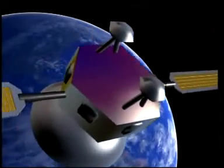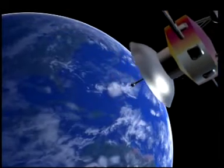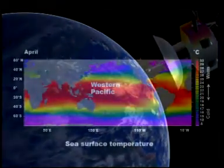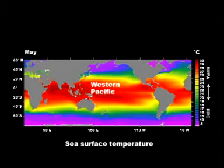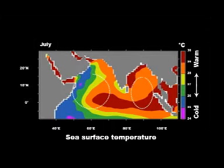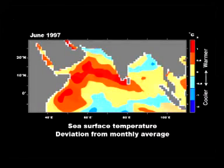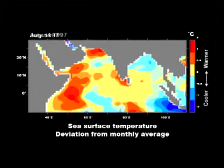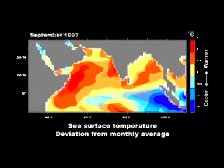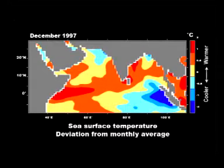Dramatic advances in satellite technology have led to the recent discovery of an El Niño-like oscillation in the equatorial Indian Ocean, called the Indian Ocean Dipole Mode. Under normal conditions, the band of warm waters in the western Pacific extends across the north Indian Ocean, and the eastern equatorial Indian Ocean is usually warmer than its western counterpart. When the positive phase of the dipole occurs, as it did in 1997, sea surface temperature increases in the west and decreases in the east. Recent research suggests that the dipole has a significant influence on rainfall over India.